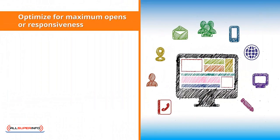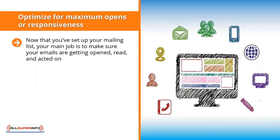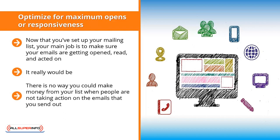Pay attention to the following tips to maximize the results you get from your email lists. Optimize for maximum opens or responsiveness. Now that you've set up your mailing list, your main job is to make sure your emails are getting opened, read, and acted on. This is the essence of list marketing. If you fail to optimize your emails, your list is dead in the water. What's the point of getting a lot of people to join your mailing list when they're not going to be reading your emails?